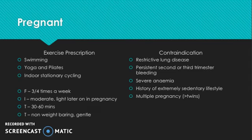For pregnant women, the recommended frequency is three to four times a week to maximise the benefits. Intensity should be moderate, but lighter later in the pregnancy as the strain on the body becomes greater. Time: 30 to 60 minutes — closer to 60 minutes for those in the earliest stages of pregnancy and around 30 minutes for those further along, as they may fatigue more quickly. The type of exercise should be non-weight-bearing and gentle but still stimulating for the body.